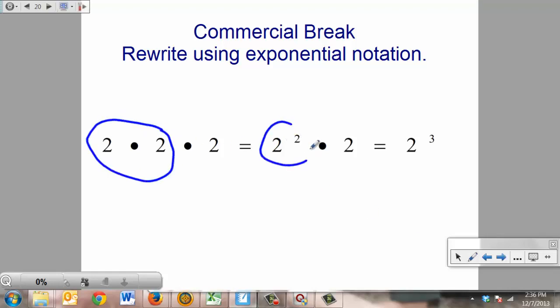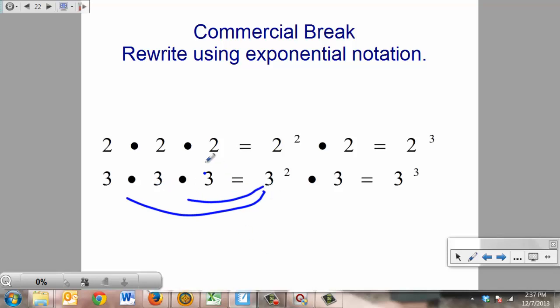Right here, your 2 times 2 is your 2 squared, and here's your other times 2 right there. We take 2 squared times 2, those two come together to be the 2 cubed. Likewise, 3 times 3 times 3 is the same thing as saying 3 squared times 3, with these two coming together here and that one there. And 3 squared times 3 is equal to 3 cubed.